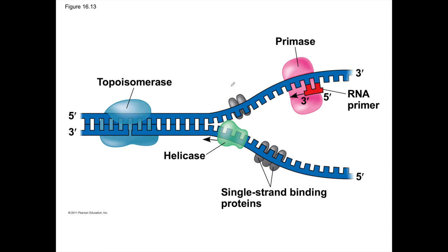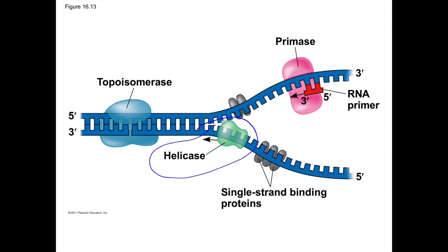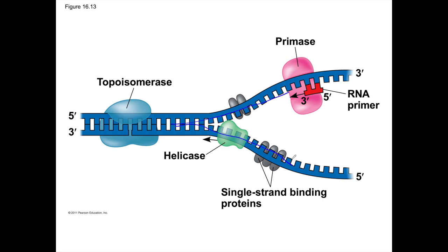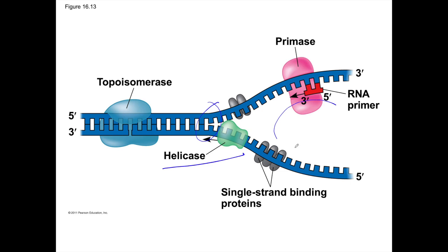For DNA replication to happen, several different enzymes work together. The first enzyme takes the DNA double helix and pulls apart or separates the two strands — this is called helicase. Helicase opens up the DNA double helix, creating what's called the replication fork and the replication bubble, because the opened region looks like a bubble.